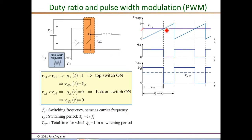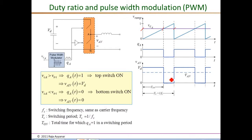From the region where V_C is higher than V_ramp, Q is one and the pole output V_AN equals V_D. From the region where V_C is less than V_ramp up to the end of the first switching period, Q is zero and V_AN is also zero.